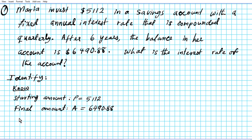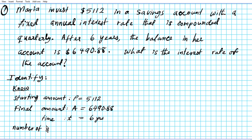The investment period: the time t that she invested her money is 6 years. This scenario is compound interest compounded n times a year. How many times is it compounded a year? It's quarterly — and if you think about quarterly, quarter means 4 times — so the number of times compounded per year, n, equals 4.